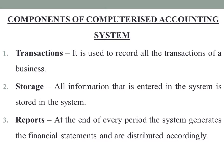A computerized accounting system records all the financial transactions of a business. It then stores all the recorded transactions for future needs. And finally, it generates all the required reports and distributes them accordingly. This is all about the components of computerized accounting system.